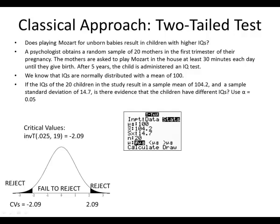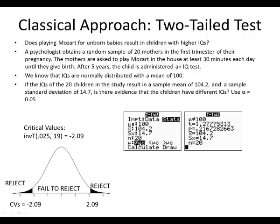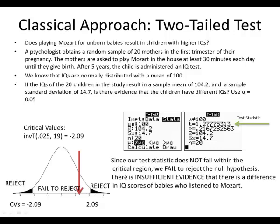We use the same t-test information but change the alternative to 'not equal' for the two-tailed test. Our test statistic is 1.277, and we are in the fail-to-reject region since our test statistic is smaller than 2.09. There is insufficient evidence to say there's a difference in the IQ scores of babies who listen to Mozart.